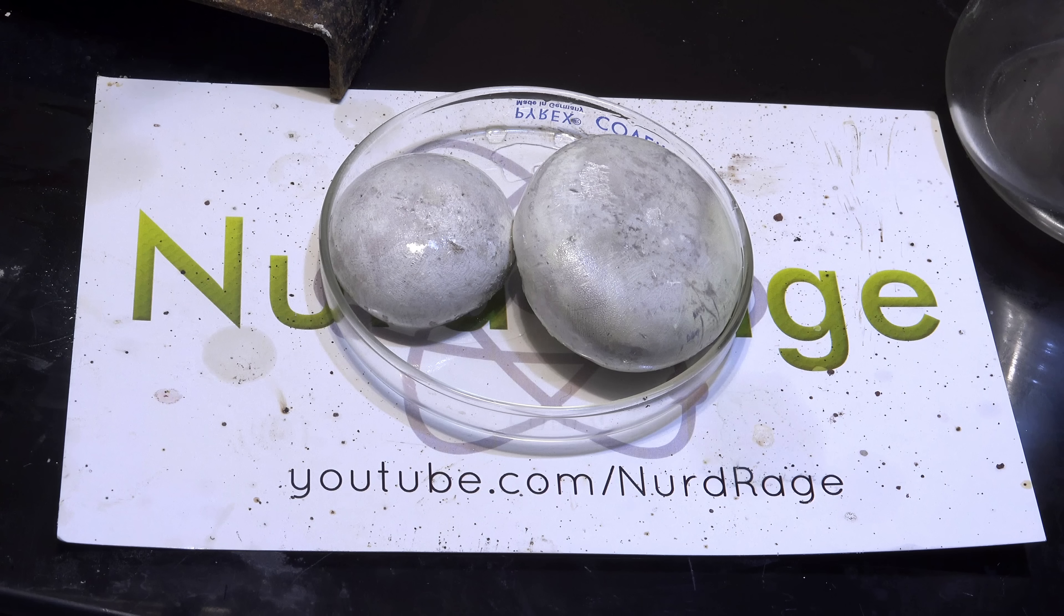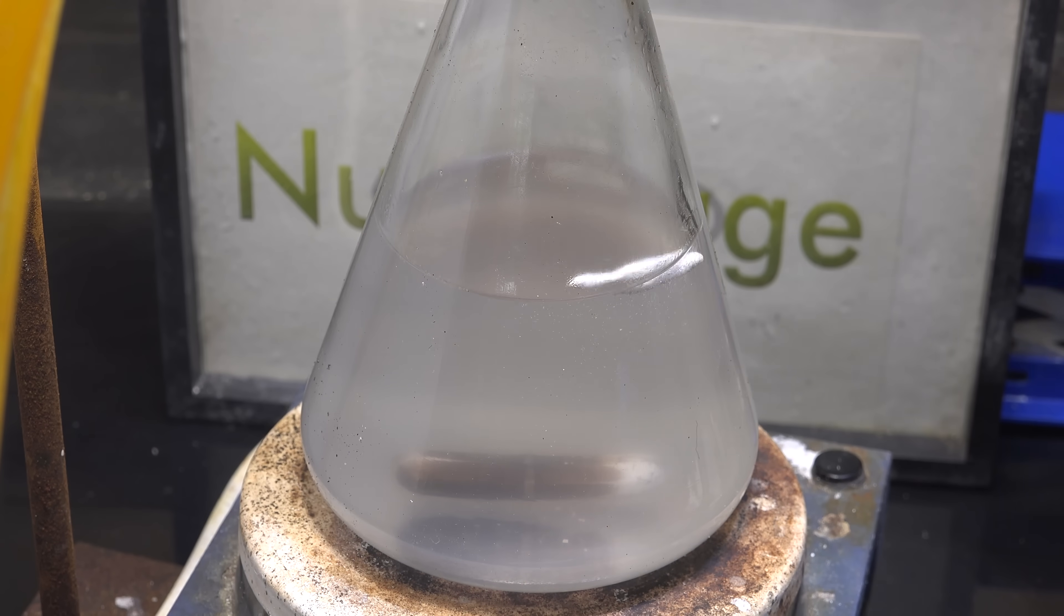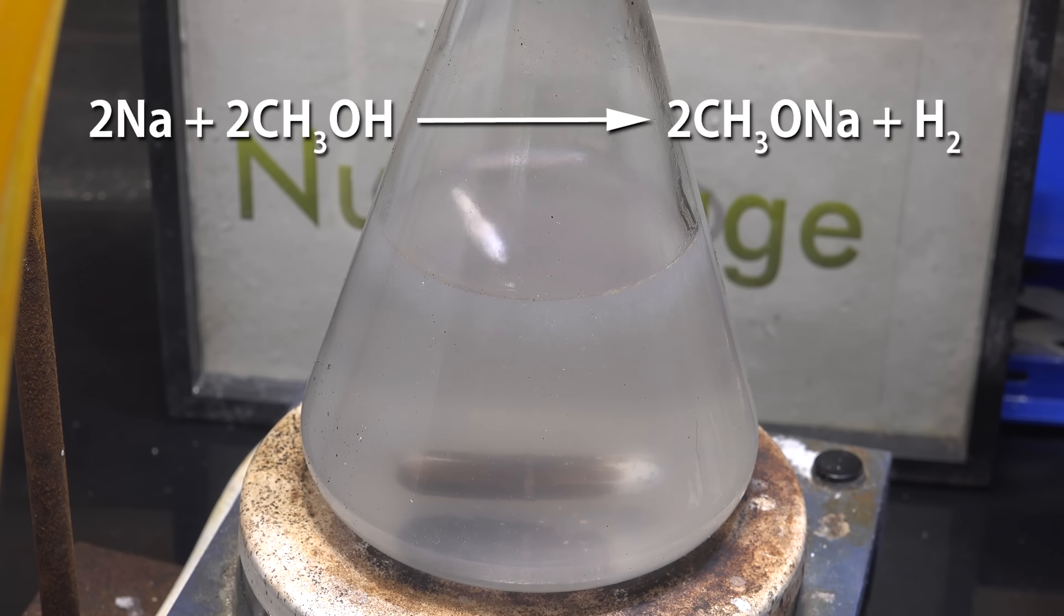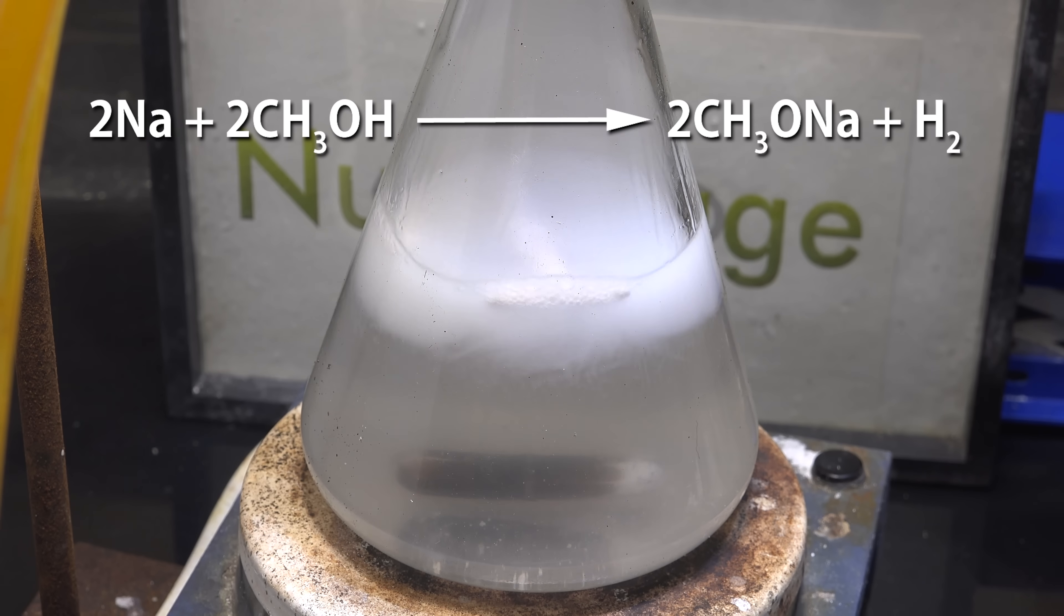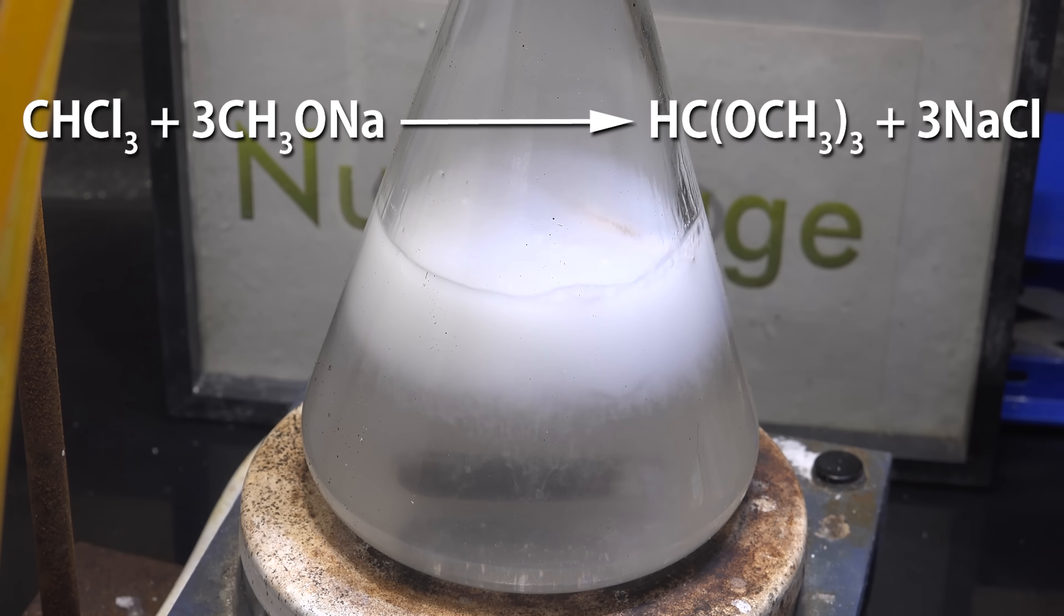Now cut this sodium into small pieces and slowly feed them through the condenser. What's happening is the sodium metal is reacting with methanol to create sodium methoxide. This is a much faster and more direct way of making sodium methoxide than the molecular sieve process. The sodium methoxide quickly reacts with chloroform to produce our target trimethyl orthoformate.